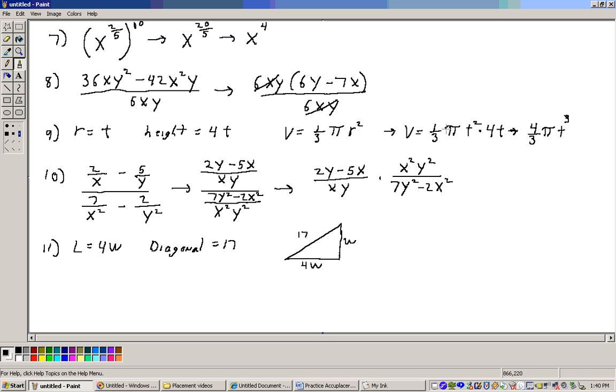Now substituting in what we know, we get v equals 1 third pi, the radius instead of being r is t, so instead of being r squared, it's going to be t squared, and instead of being h right here, it's going to be a 4t. So now this is what we have. The 4 we can bring over with the 1 third, making it 4 thirds. 4 thirds pi, a t squared times a t is t cubed, so the answer would be 4 thirds pi t cubed.